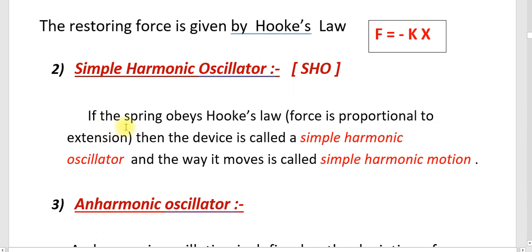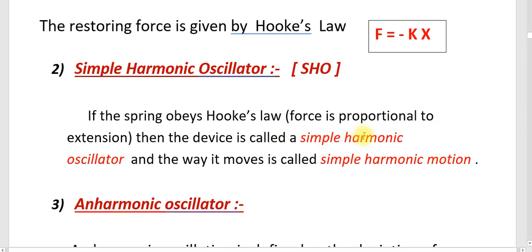If a spring obeys Hooke's law — that is, force is proportional to the extension — then that device is called a simple harmonic oscillator, and the way it moves is called simple harmonic motion. We can say that any device following simple harmonic motion and obeying Hooke's law is a simple harmonic oscillator.